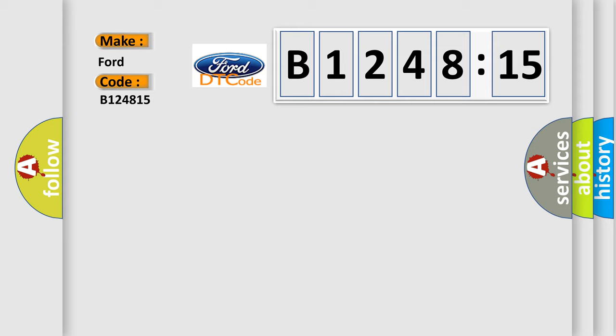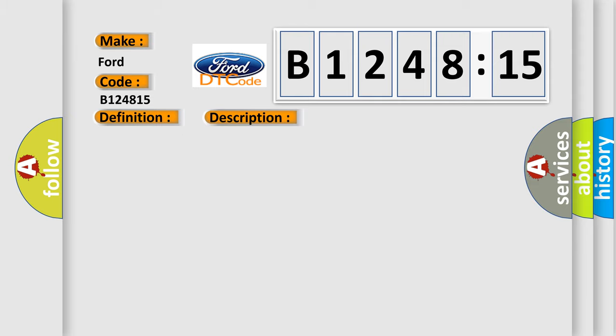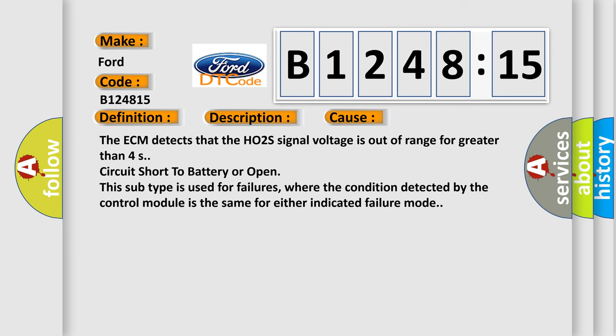So what does the diagnostic trouble code B124815 interpret specifically in Infinity car manufacturers? The basic definition is H02S circuit closed loop CL performance bank one sensor. And now this is a short description of this DTC code. The engine is operating, the ignition voltage is between 11 to 18 volts. DTC P0130 and P0150 run continuously once the above conditions are met.